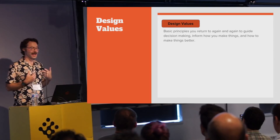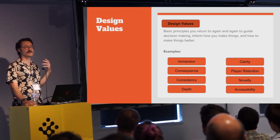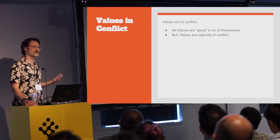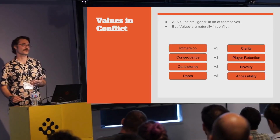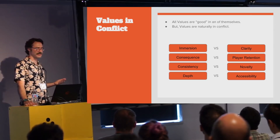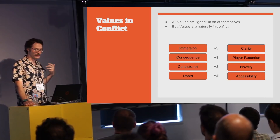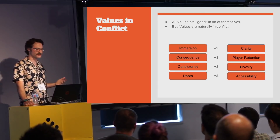Design values are your basic design principles or standards that inform how you make everything on the project and what you value in the creation of it — things like immersion, consequences, consistency, depth, novelty. The nice thing about values is it's understood that all values are good — every single one is fantastic — but there's also a clear understanding that values are in conflict with one another. Clarity might lead you to make consequences of player decisions obvious in your UI, but that might be against your idea of immersion. All values are good, but they're not necessarily the right values for your game, and how you define and prioritize them has a huge impact on how you make decisions.